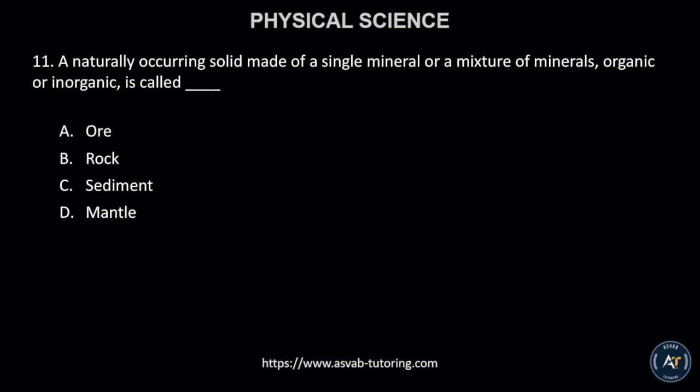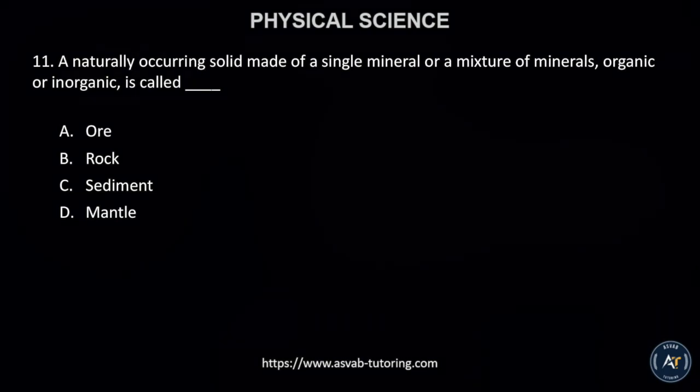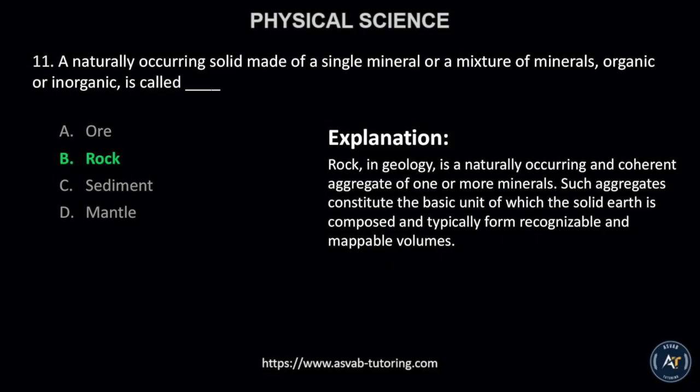Number 11. A naturally occurring solid made of a single mineral or a mixture of minerals, organic or inorganic, is called A. — B. Rock, C. Sediment, or D. Mantle. The correct answer is B. Rock.